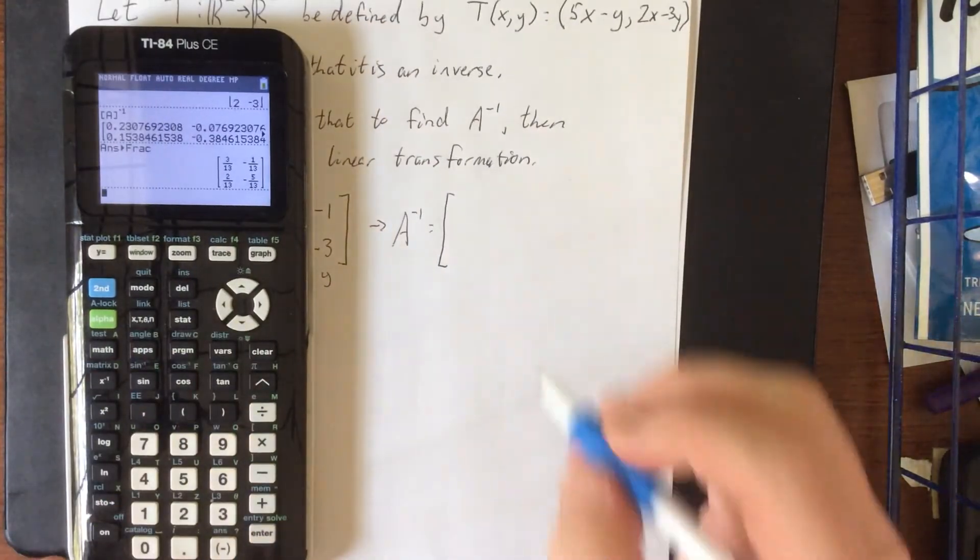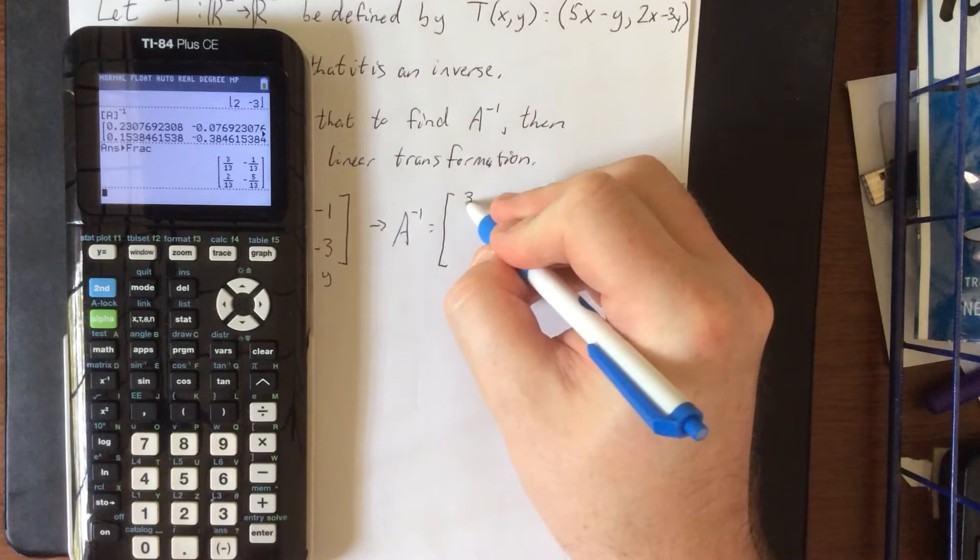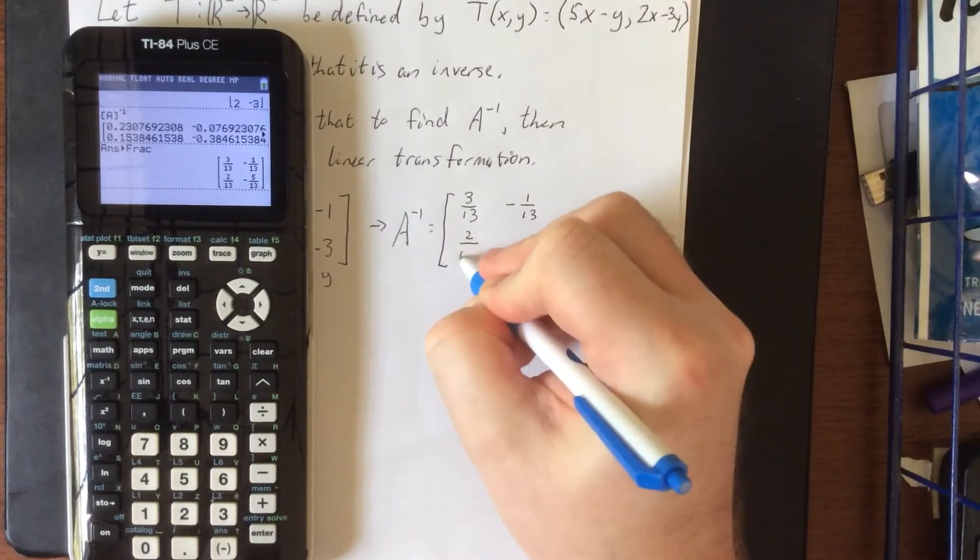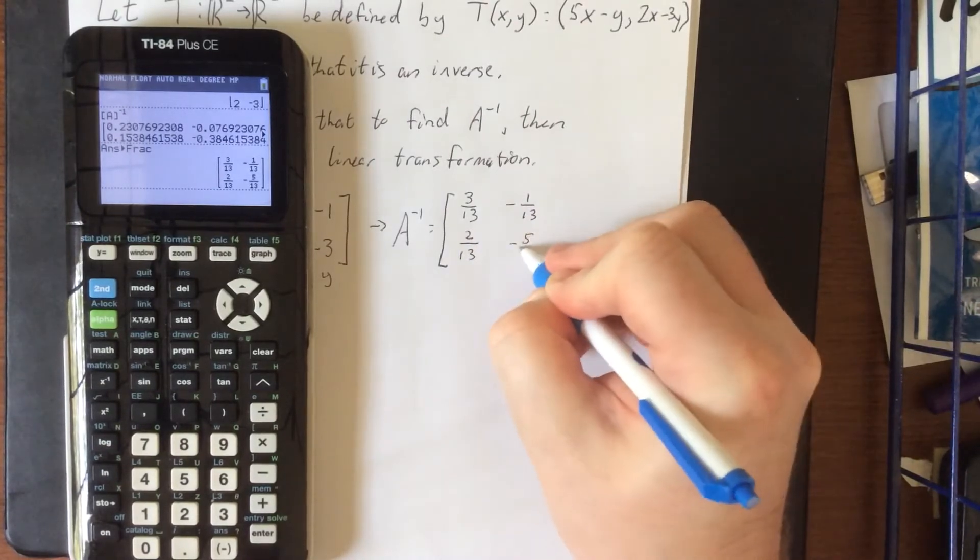So copying down our four entries that we see here, this is 3/13, negative 1/13, 2/13, and negative 5/13.